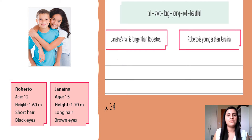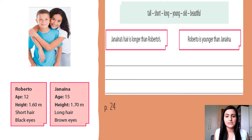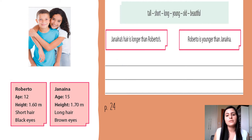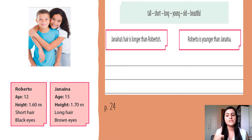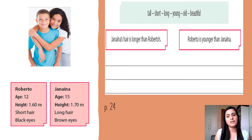Janaína: age 15, height 1.70, long hair, brown eyes. Guys, here I have some adjectives and I want you to make comparisons about them. Aqui ao lado, eu tenho alguns adjetivos e eu quero que vocês façam comparações sobre o Roberto e a Janaína. The adjectives are: tall, short, long, young, old, beautiful.